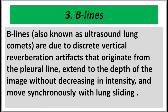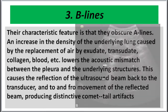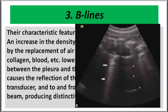B lines, also known as ultrasound lung comets, are discrete vertical reverberation artifacts that originate from the pleural line, extend to the depth of the image without decreasing in intensity, move synchronously with lung sliding, and characteristically obscure A lines.